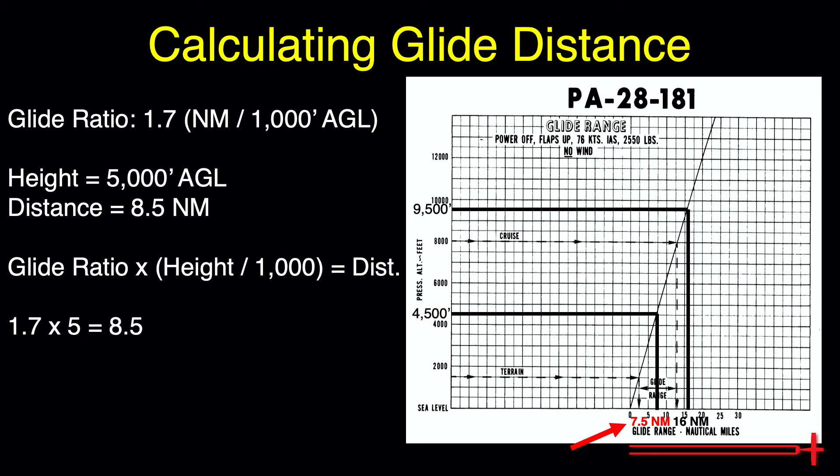We should subtract the distance that we will glide from 4,500 to the surface from the distance we expect to glide from 9,500 to the surface. Once we've done that, we are left with our glide distance from 9,500 down to 4,500, or about 8.5 nautical miles.